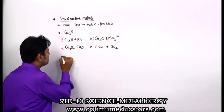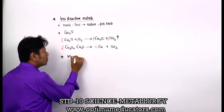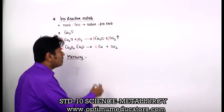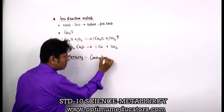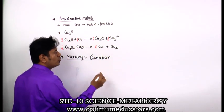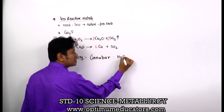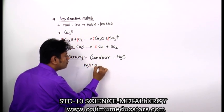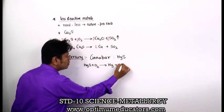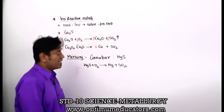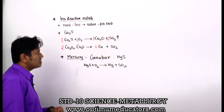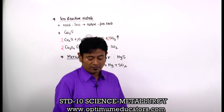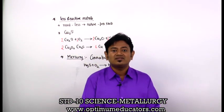Mercury extraction: mercury is found in the form of cinnabar, with formula HgS. HgS reacts with O2 to give Hg + SO2. With this, we are done with the discussion of less reactive metals. The next topic is refining of metals - removal of impurities from the extracted metal.